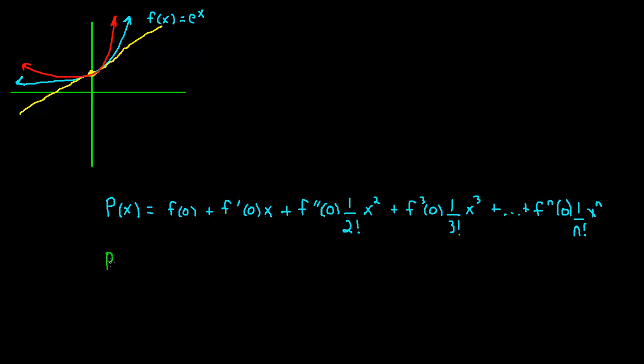The third Maclaurin polynomial is going to look like the following. We evaluate f(0) - we throw zero in for e and get one. What is f'(0)? The derivative of e^x is just e^x, and that evaluated at zero is one. One times x is x.